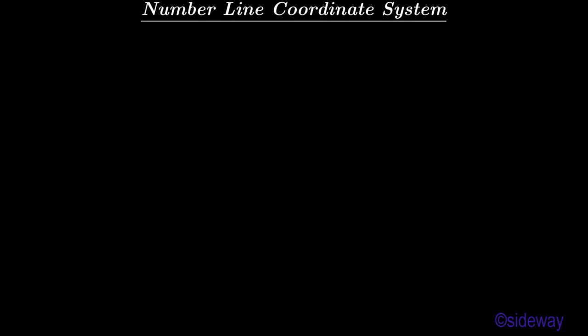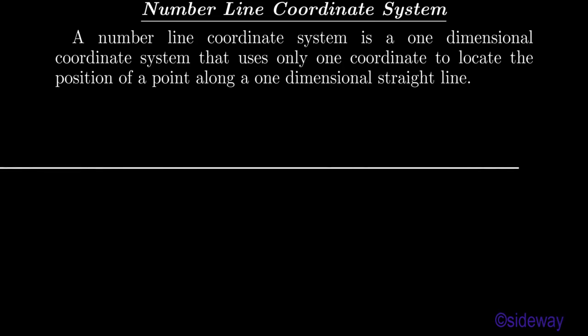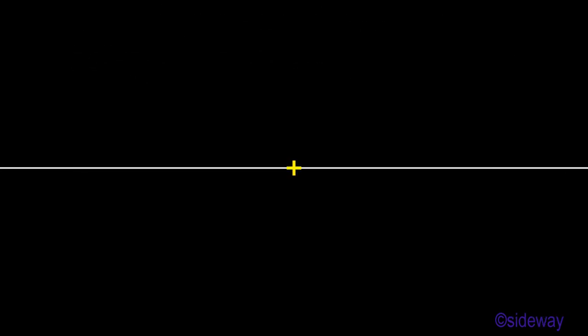Number Line Coordinate System. A Number Line Coordinate System is a one-dimensional coordinate system that uses only one coordinate to locate the position of a point along a one-dimensional straight line. An arbitrary point on the line is chosen as the origin, position 0, of the Number Line Coordinate System, where something begins or emanates from. The coordinate of a point on the straight line is defined as the signed distance from the origin.